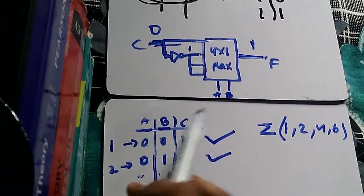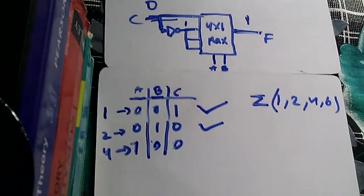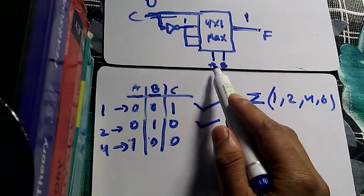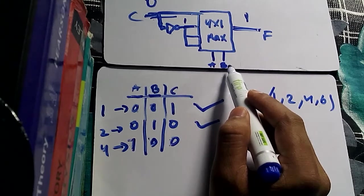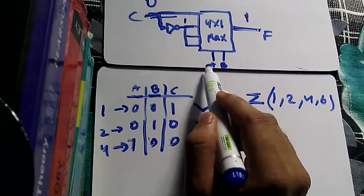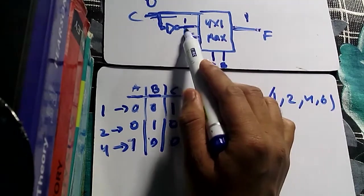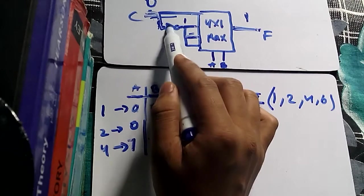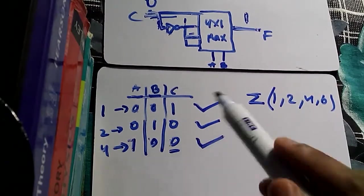The third value to check is minterm 4, binary code 1 0 0. This sets A=1, B=0, and C=0. With A=1 and B=0, the select lines connect the third input to the output. The third input also comes from variable C through a NOT gate. C=0 passes through the NOT gate, becomes 1, and passes through this third line. The result is 1, so this combination is also satisfied.